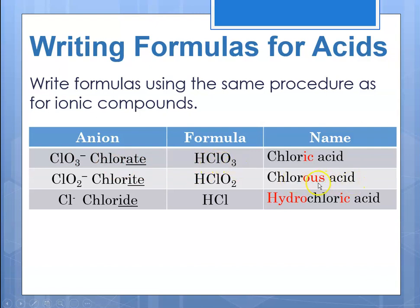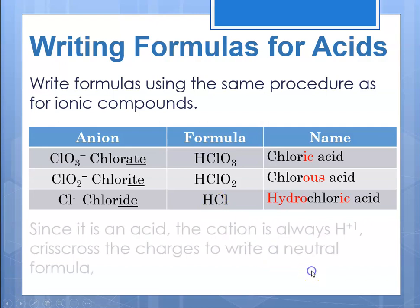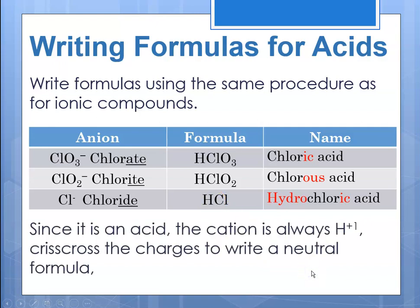If it was chlorous acid, we know it comes from the chlorite anion, so the formula would be HClO₂. And if it was hydrochloric acid — "hydro-blank-ic" — that means it comes from the chloride anion, so the formula would be HCl. Since it is an acid, the cation is always H⁺¹, so you crisscross those charges to write a neutral formula.